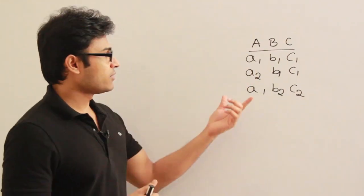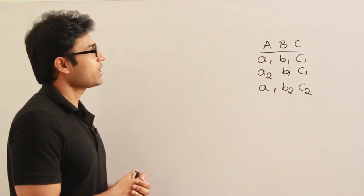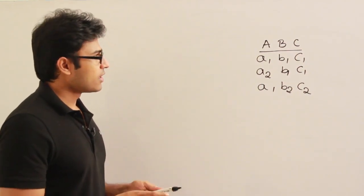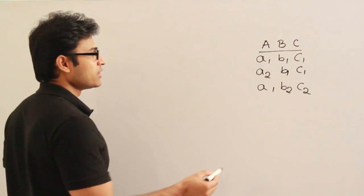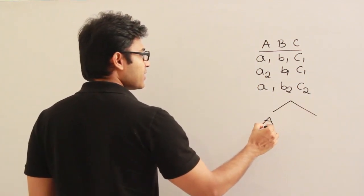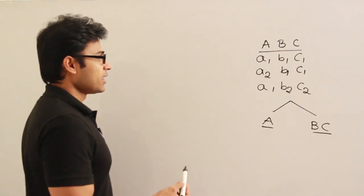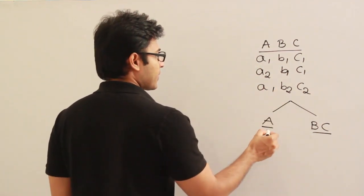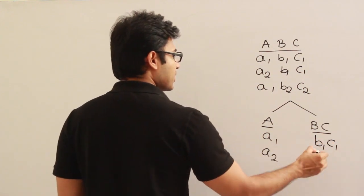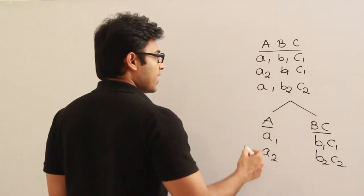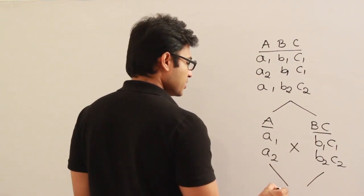Let's say we have a table and we decide to divide it into small tables. Whenever you divide into small tables, if there are no common attributes between them, it will be difficult to combine them later. For example, if you split the table into two tables — one containing just A and the other containing B and C — then later when you try to combine them, it becomes a big problem, because you have to take a cross product.